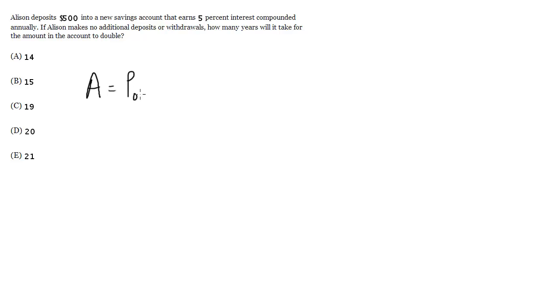We will call P₀ the principal, the amount of money invested first. In this case, it's going to be $500. That's the starting amount of money in the account.